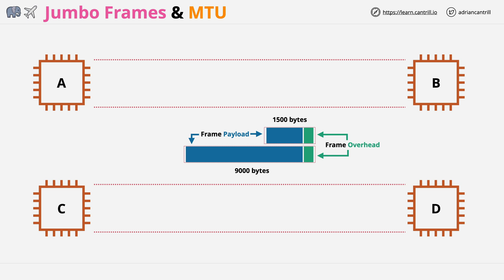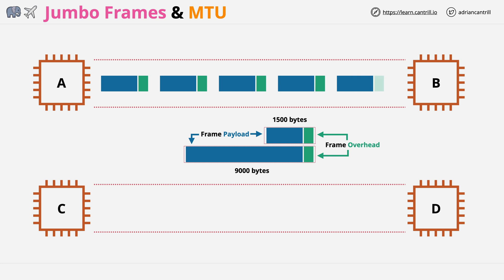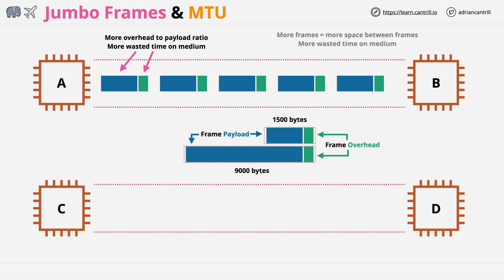With standard frames between instances A and B, data is split between frames and transmitted on the shared medium. There are two things to consider: first, there's always the frame overhead regardless of payload size; and second, there's always space between frames — time where nothing is being transmitted — used as a method of demarcation. With normal frames you have a high ratio of overhead to payload size, which is inefficient. More frames per amount of data also means more space between frames and more wasted time on the medium.